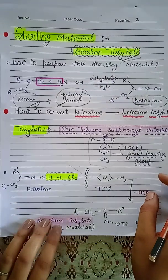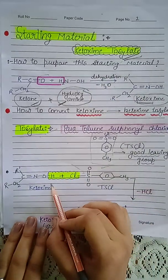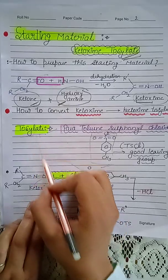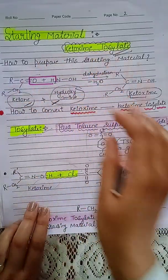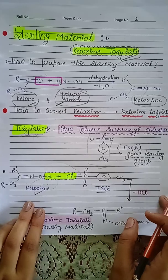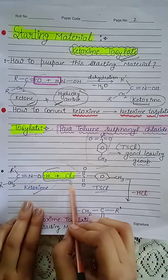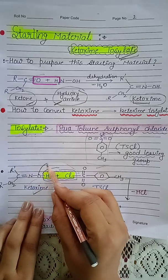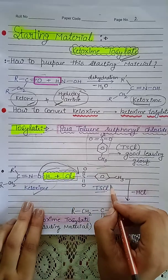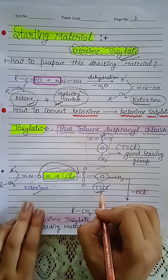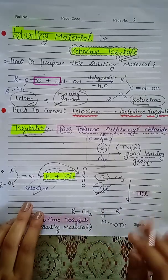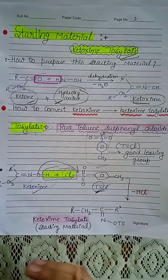Para-toluenesulfonyl chloride is also represented as TsCl, and it is a good leaving group. To convert ketoxime into ketoxime tosylate, we use the tosylate group. When ketoxime reacts with TsCl, removal of hydrochloric acid occurs, and the oxygen bonds to the sulfur group. We can write the tosylate group as 'Ts' for short, giving us ketoxime tosylate, which is the starting material of the reaction.